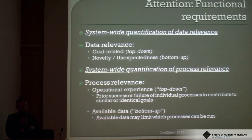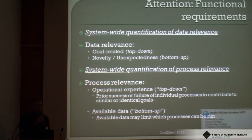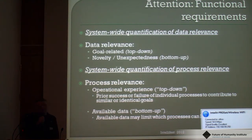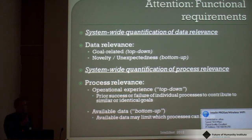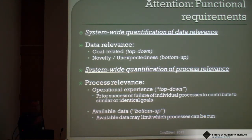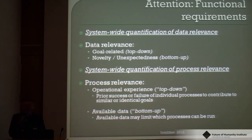The high-level functional requirements for core attention are: first, system-wide quantification of data elements — relevance can be determined by relation to active goals (top-down) and by the novelty and unexpectedness of data given prior operating experience; second, system-wide quantification of process relevance, determined from operational experience of how a particular process has performed in achieving certain goals, and by the data currently available for processing.